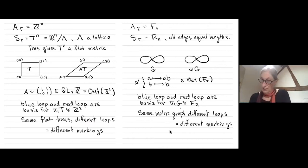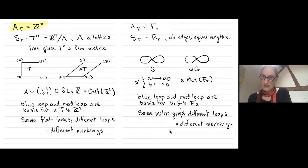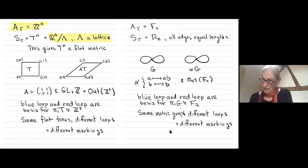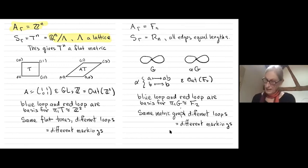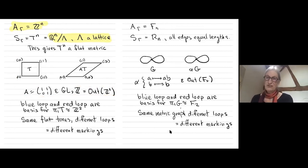Let's start with free abelian groups. The Salvetti is an n-torus, and I want to think of that torus as a metric space — as Euclidean space modulo a lattice. That gives the torus a flat metric; locally it looks like Euclidean space. Here's an example: a fundamental domain for the standard lattice R^n mod Z^n — identifying opposite sides gives the standard torus.